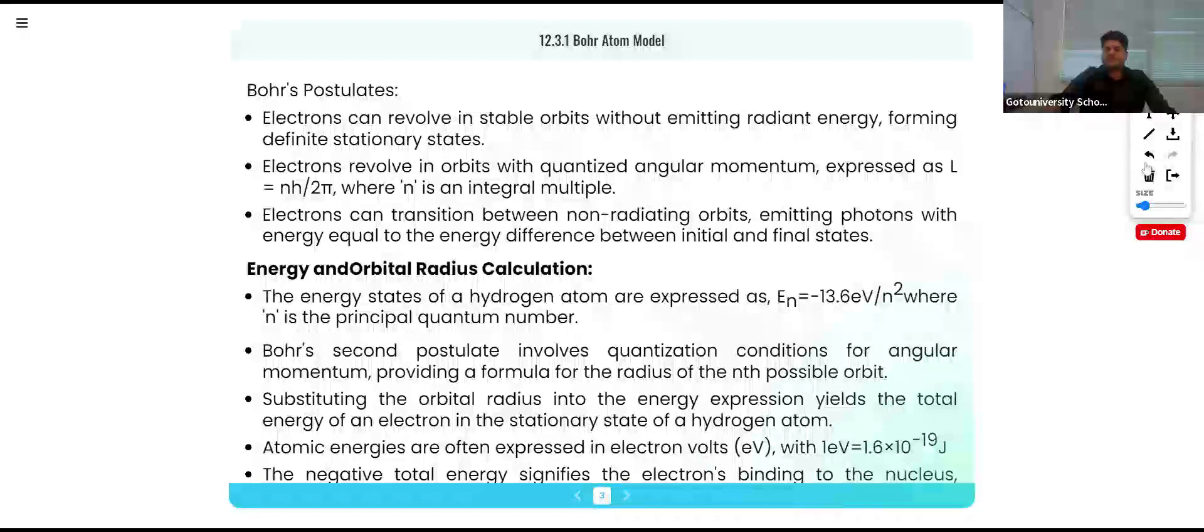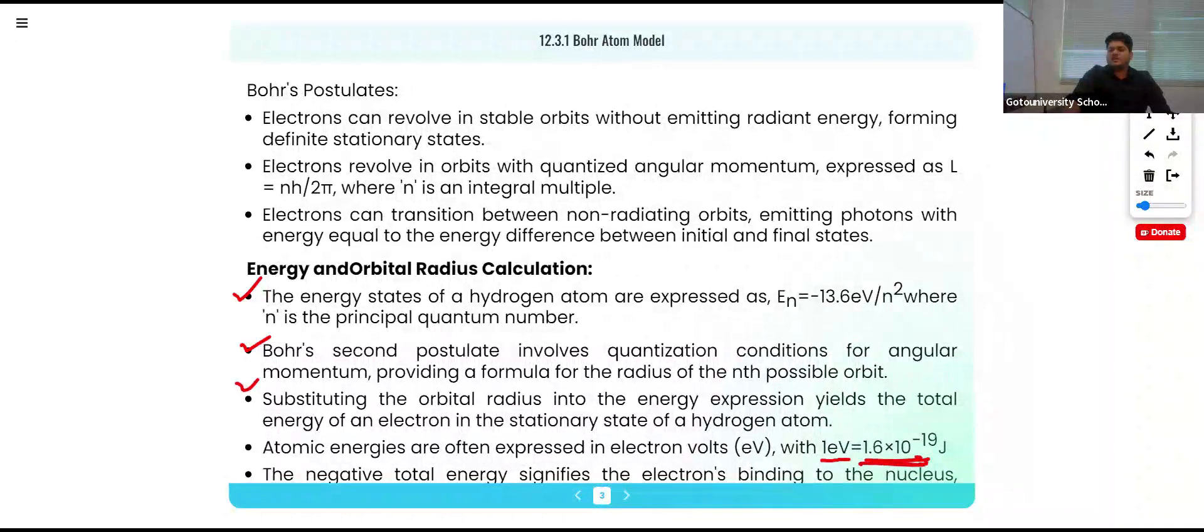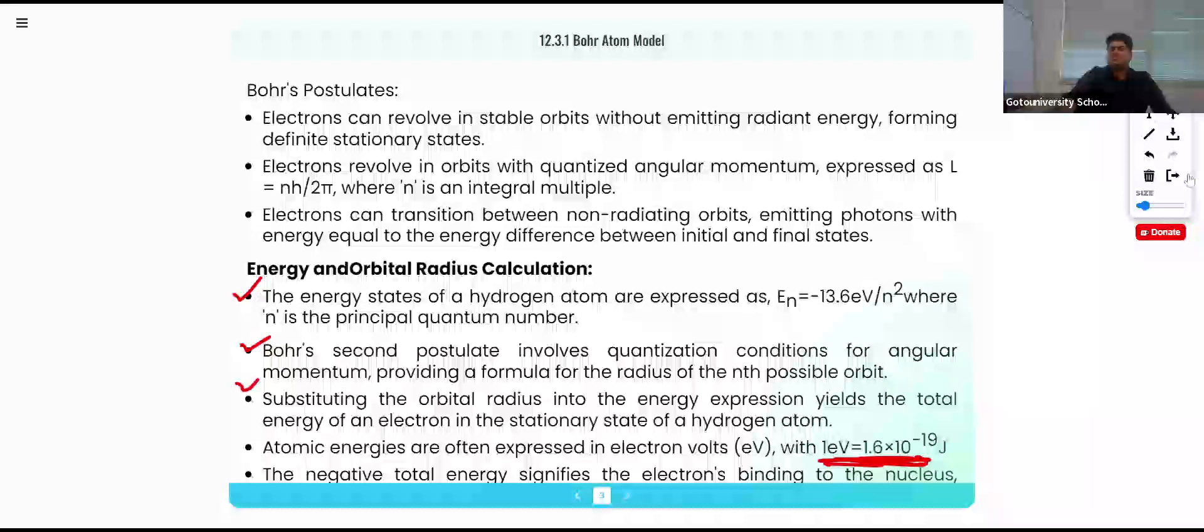Energy and orbital radius calculation: the energy states of a hydrogen atom are expressed as E equals minus 13.6 eV upon n square, where n is the principal quantum number. Bohr's second postulate involved quantization conditions for angular momentum, providing the formula for the radius of the nth possible orbit. The total energy of an electron in a stationary state of a hydrogen atom is expressed in eV, and 1 eV equals 1.6 times 10 to the minus 19 joules.